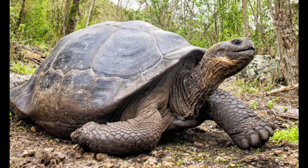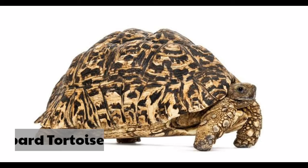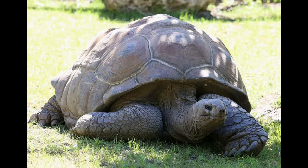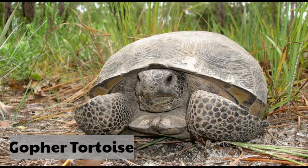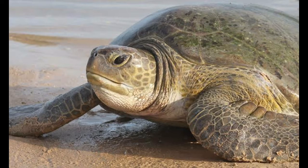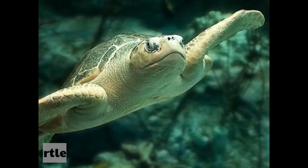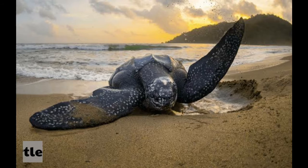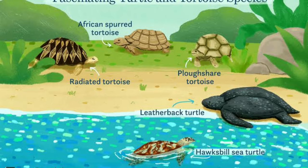Some examples of tortoises are the leopard tortoise, Aldabra giant tortoise, gopher tortoise, and more. Some examples of turtle species are the olive ridley turtle, green turtle, and leatherback turtle. So the conclusion is: the difference between a tortoise and a turtle is apparent when their habitat is taken into consideration.